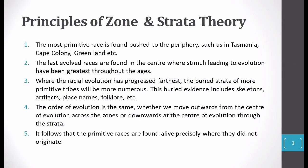The first principle: the oldest races, the most primitive races, the first races, came to the periphery — they were supposed to be in the corners. Griffith Taylor placed these in the world's corners: Tasmania, Cape Colony, Greenland — all on the periphery. Where the world map ends, these areas are all available. They believe that the oldest races are in the periphery.